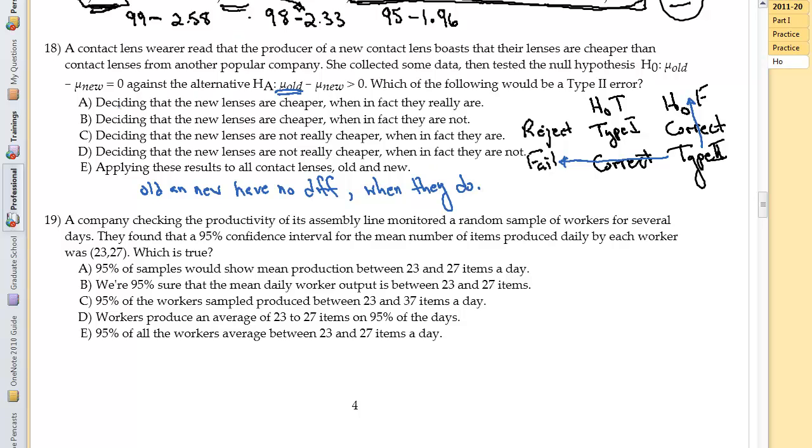So it wouldn't be deciding the new lenses are cheaper. It would be deciding that the new lenses are not really cheaper when in fact they are. So 18 is going to be C right there. Because that was the statement that I wrote below. That they have no difference, that they're not really cheaper when they do have a difference, when in fact they actually are cheaper.